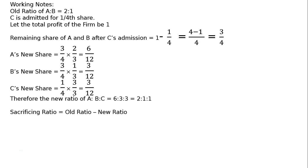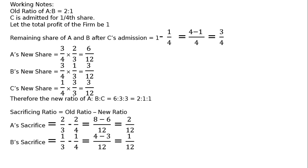Sacrificing ratio: sacrificing ratio equals old ratio minus new ratio. A's sacrifice is 2/3 minus 2/4. LCM is 12: 8 minus 6 equals 2/12. B's sacrifice is 1/3 minus 1/4. LCM is 12: 4 minus 3 equals 1/12. Therefore the sacrificing ratio of A to B is 2:1.